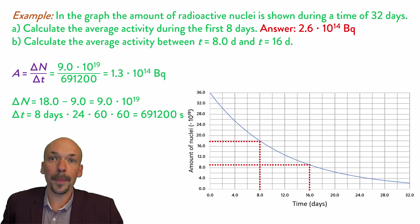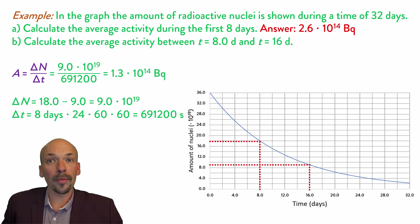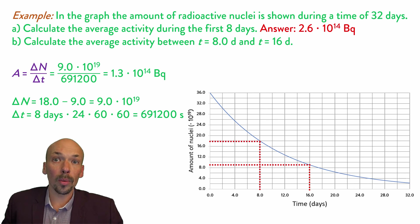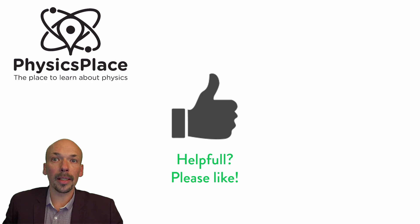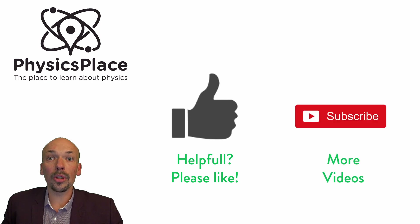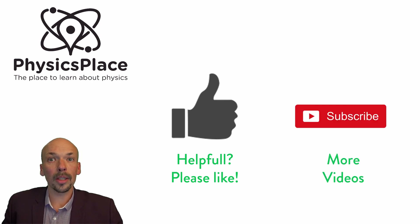As you can see, the amount of activity went down. The longer you have a radioactive sample, the lower the activity will get. That's it — you should now know how to calculate with radioactivity. If you found this video helpful, please let me know by liking, and of course subscribe for more videos. Thanks for watching.